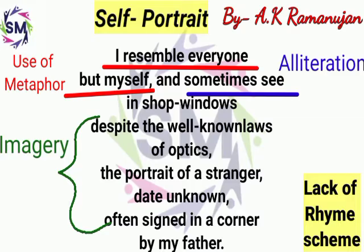Let's talk about the poet. He was born in Mysore in 1929. He was a folklorist, translator, linguist, scholar, playwright, and poet. It means that in the fields he had a perfection and in the fields he had contributed to his work.